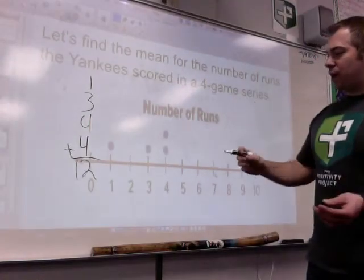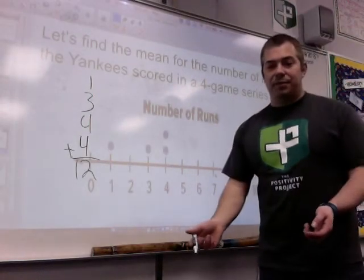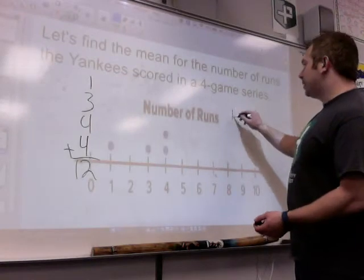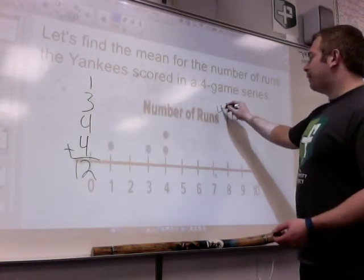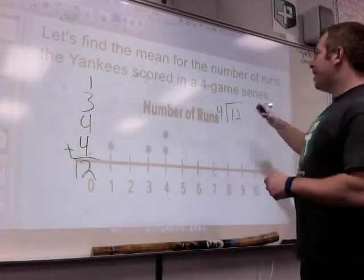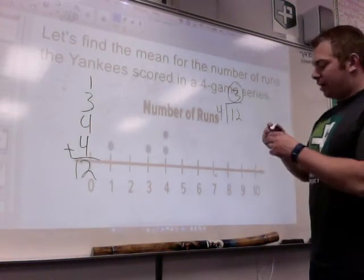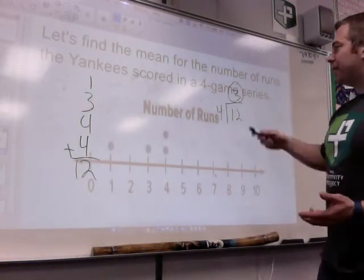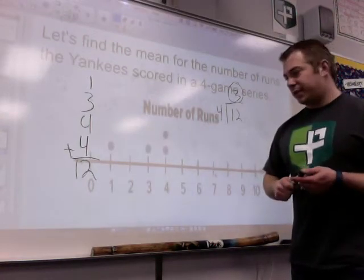So they scored twelve runs in four games. What did they average? What was the mean? So I take my 12, and I divide it by 4. 4 goes into 12. 4, 8, 12. They averaged three runs per game. The mean for that situation was three runs.